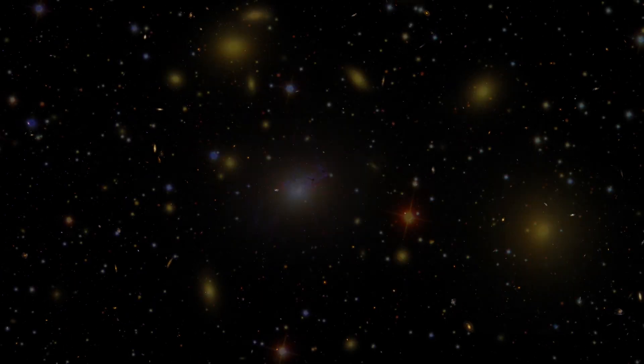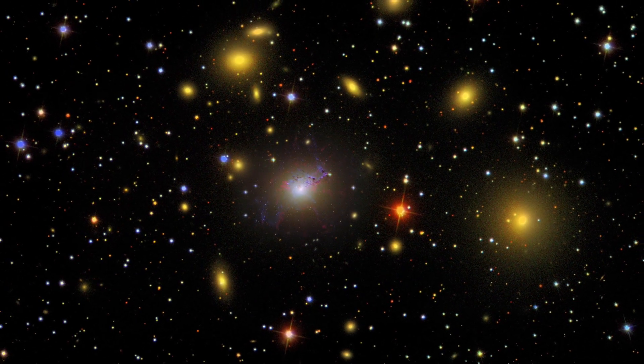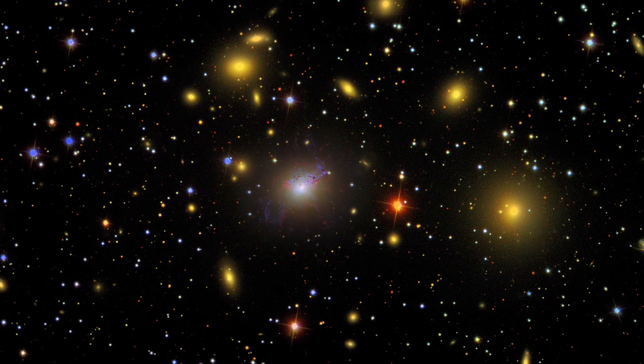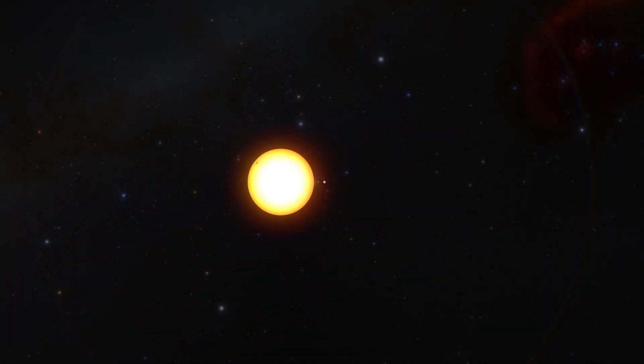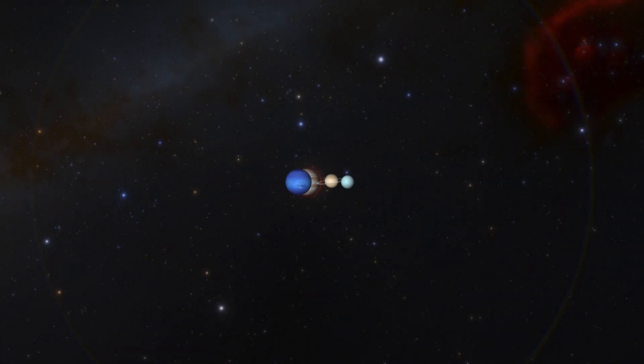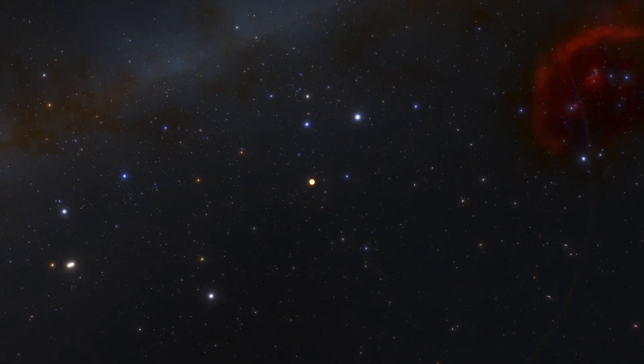Finally, at the largest scales to the universe, we see that even galaxies are organized into groups, clusters and superclusters. Seeing the cosmos from its smallest to its largest scales, we get a view of just how vast it is.